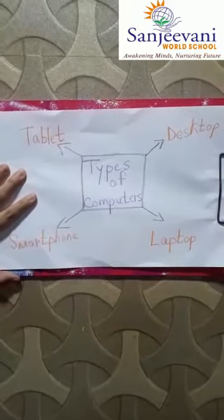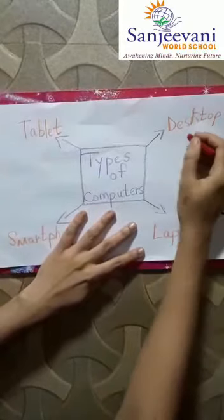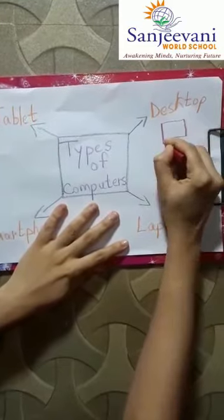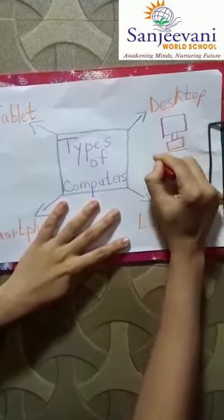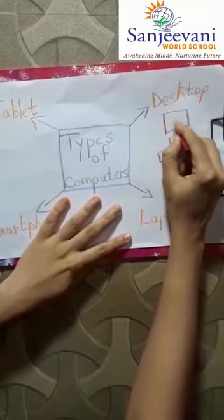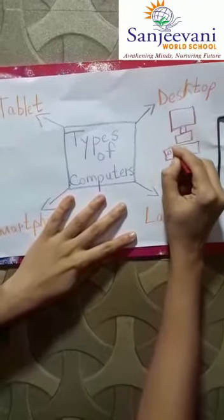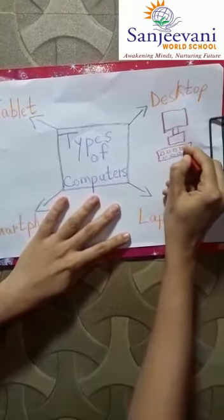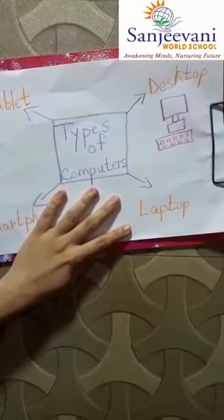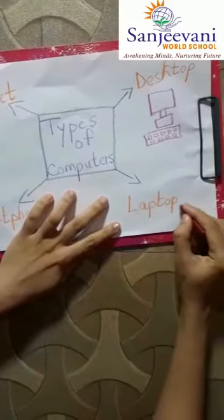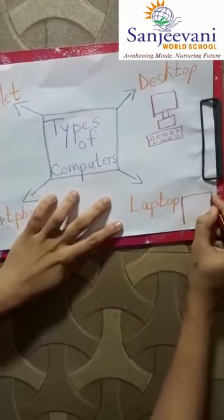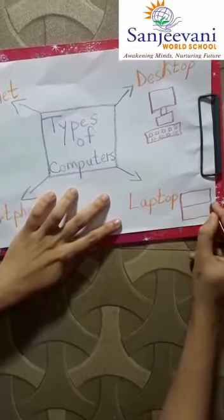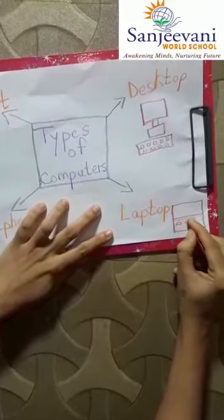Now I want you all to draw — simple drawing we will do. Let's do the drawing of a desktop. See how teacher is doing — this is the screen and these are the keys on the keyboard. Very simple. We have completed the drawing of a desktop. Now next, a laptop — look at how I am doing it. Again here are the keys.